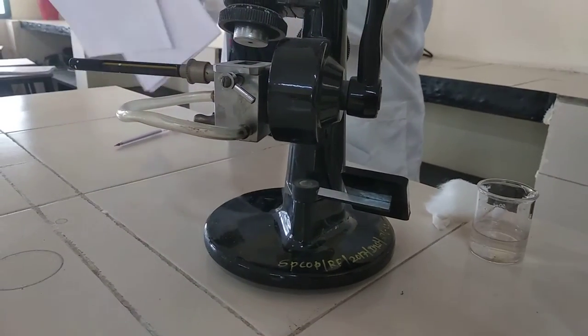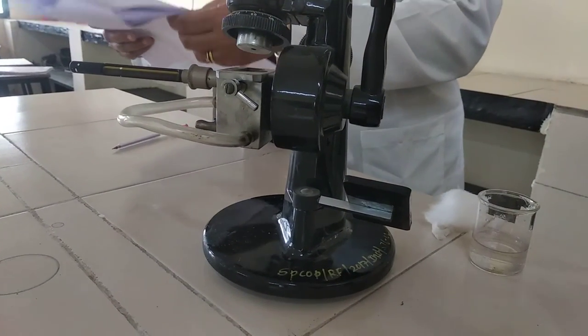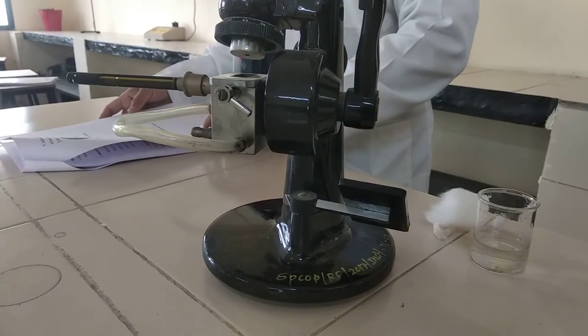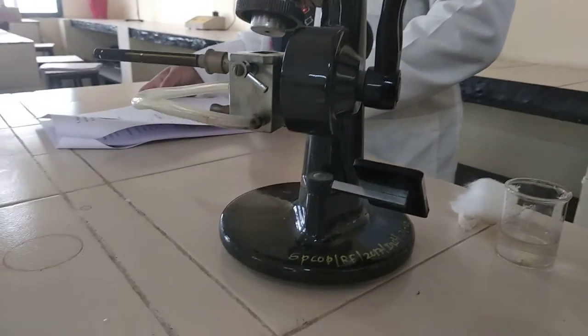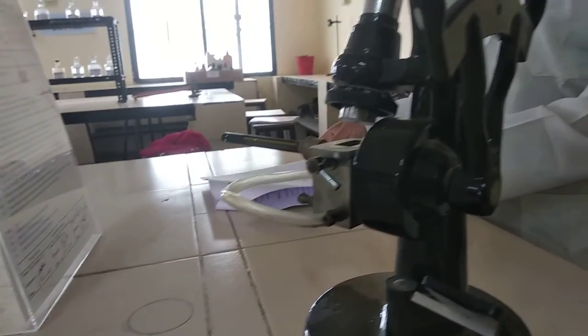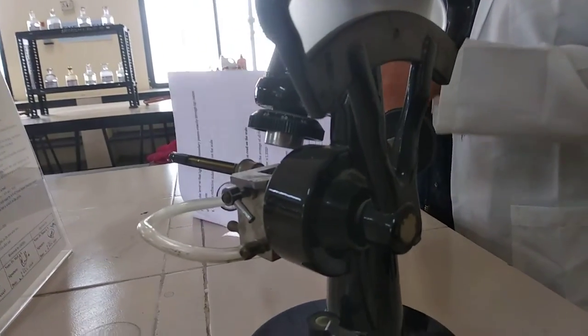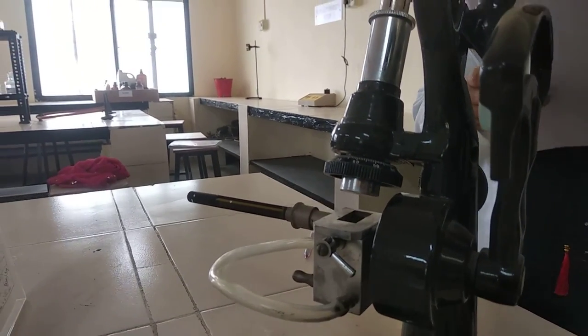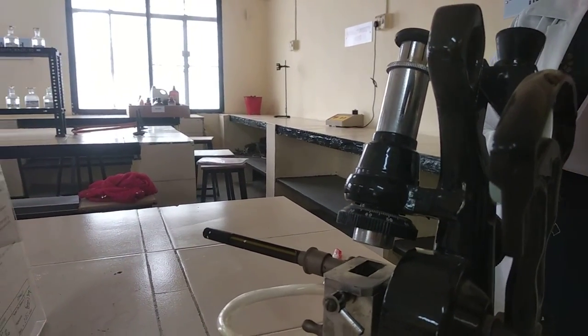Always take three sets of reading and find the average of all readings. For water, the refractive index is 1.333. Like this, we can easily find out the refractive index of various oils and various solutions.